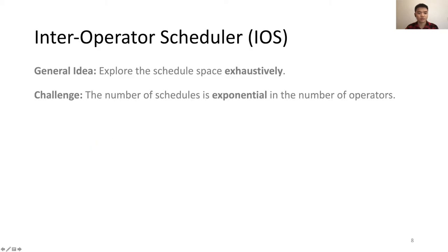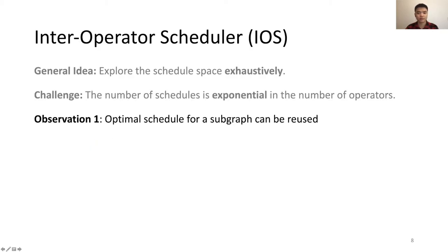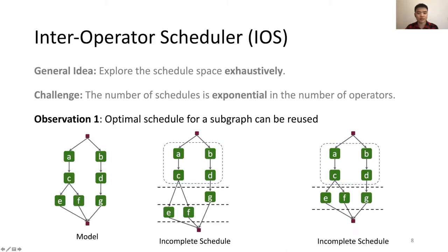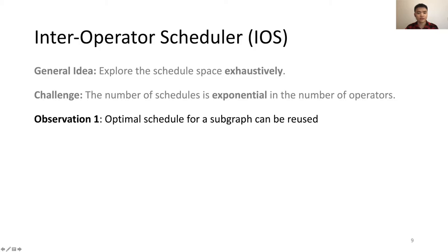To address this challenge, we observe that the optimal schedule for a subgraph can be reused. For example, if two incomplete schedules have both scheduled operators E, F, and G, leaving operators A, B, C, and D unscheduled, we can find the optimal schedule for that unscheduled subgraph once and reuse it in both incomplete schedules. With this observation, we propose using a dynamic programming algorithm to reuse the optimal schedule for a subgraph.